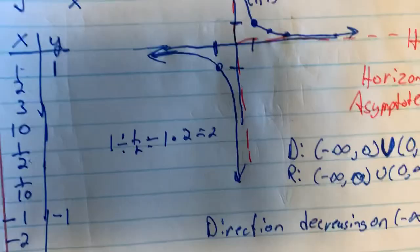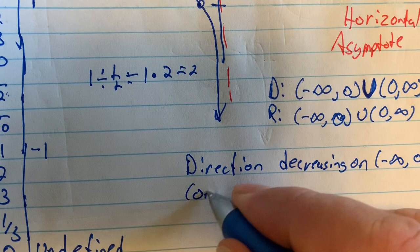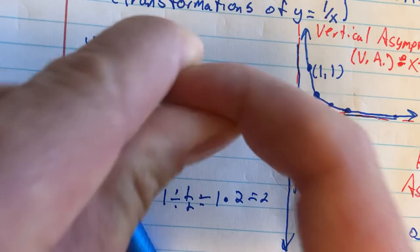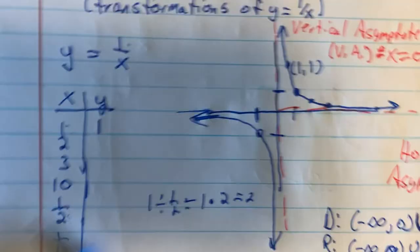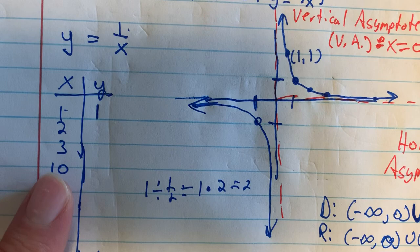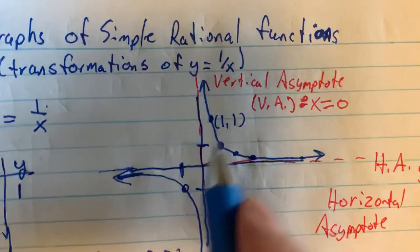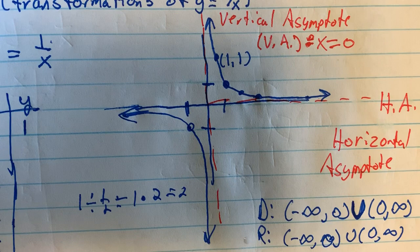We might also talk about concavity — how the function is bending. On the left side, from negative infinity to 0, the function is concave down: you'd have to bend a straight line downward to match this shape. On the right side, from 0 to infinity, it's decreasing but bending up, so it's concave up.